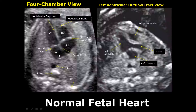Firstly, we will study the fetal heart. The best view to completely see the heart is the four-chamber view, in which we can see all four chambers, the valves, the interventricular septum, the atrial septum, and the foramen ovale. Here is the moderator band in the right ventricle, and this circular anechoic structure is the descending aorta. Always remember the aorta will be very near to the left atrium.